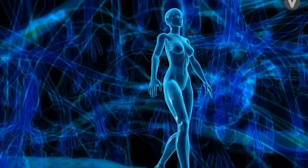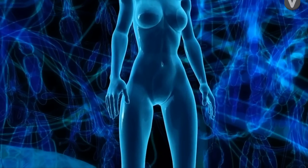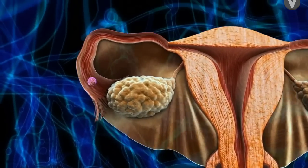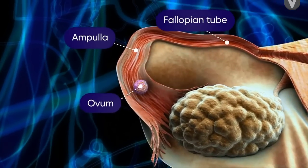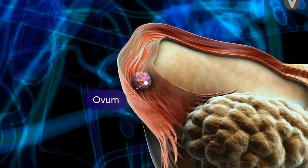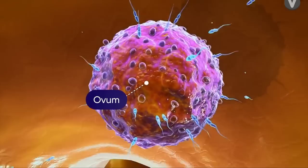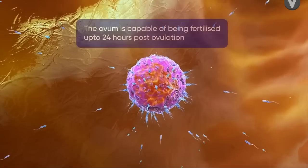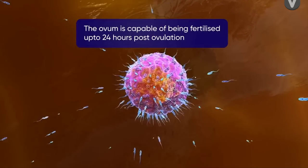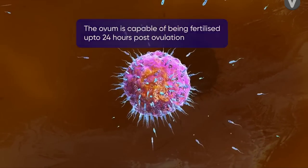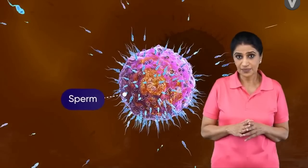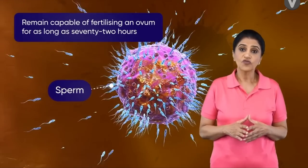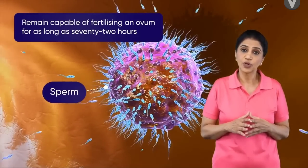In an adult female, during a normal menstrual cycle, only one egg is observed in the ampulla of the fallopian tube. It remains capable of being fertilized for only about 24 hours following ovulation, whereas sperm cells may remain capable of fertilizing an ovum for as long as 72 hours.